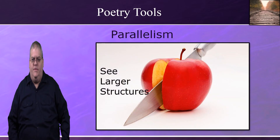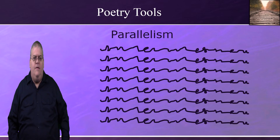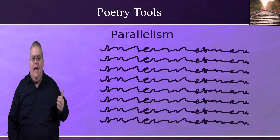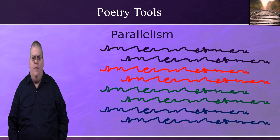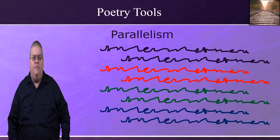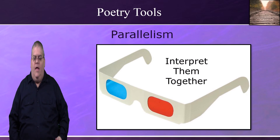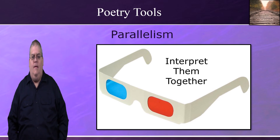Parallelism can also help us see larger structures and can actually cut our work in half. If we have eight lines of poetry, we might think we have eight ideas to work with. But if those lines are in parallel, they're not eight different ideas — they might be four ideas in four sets of parallel lines. So the bottom line: we need to see which lines of poetry go together and interpret the parallel lines together as a whole. Because the author put them together intentionally, we should see them and understand them together. They're not separate lines or separate ideas, but one idea given in parallel lines.